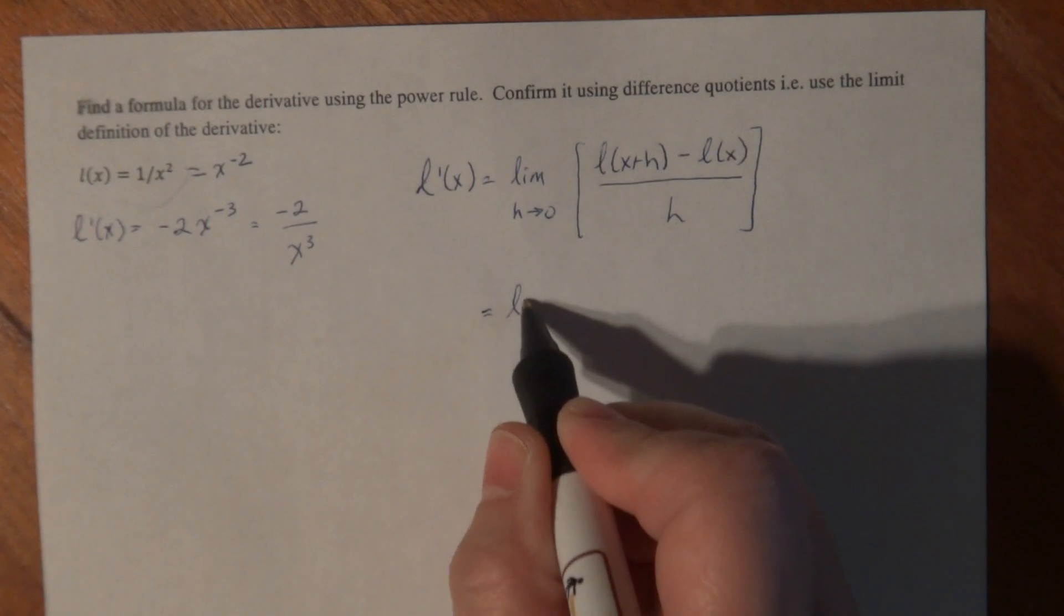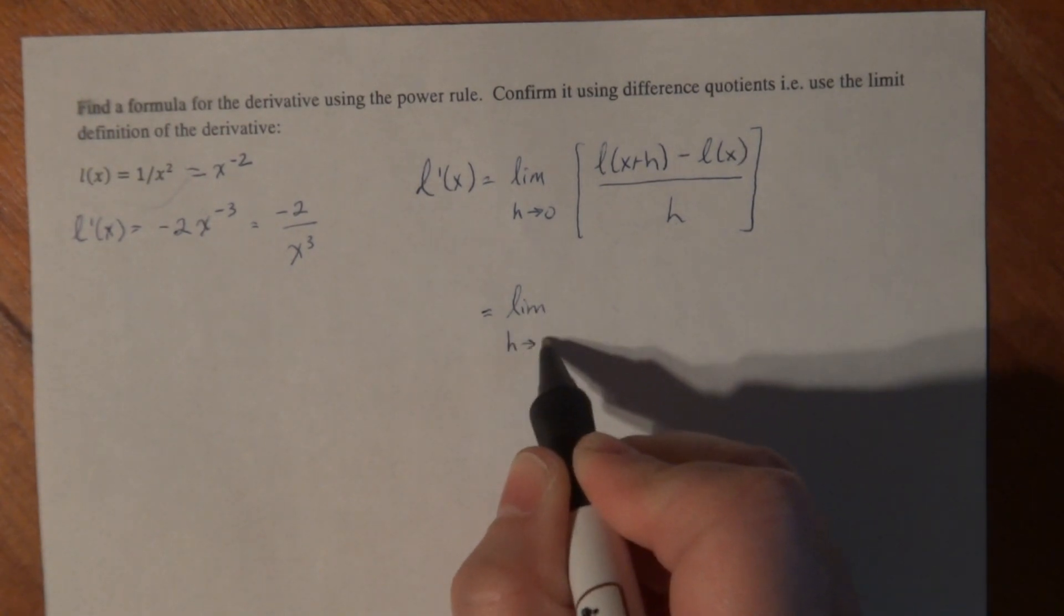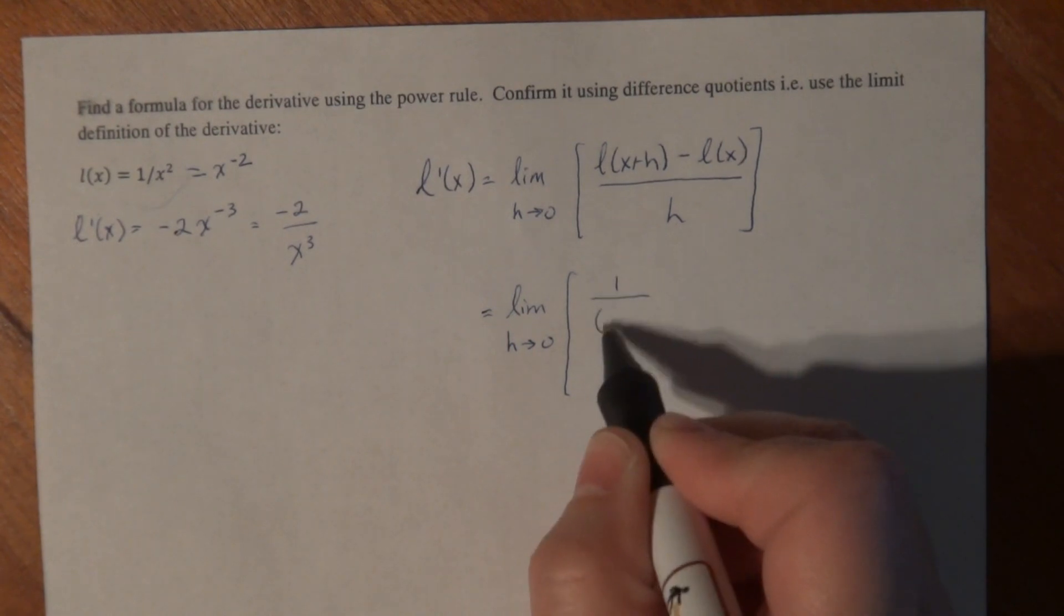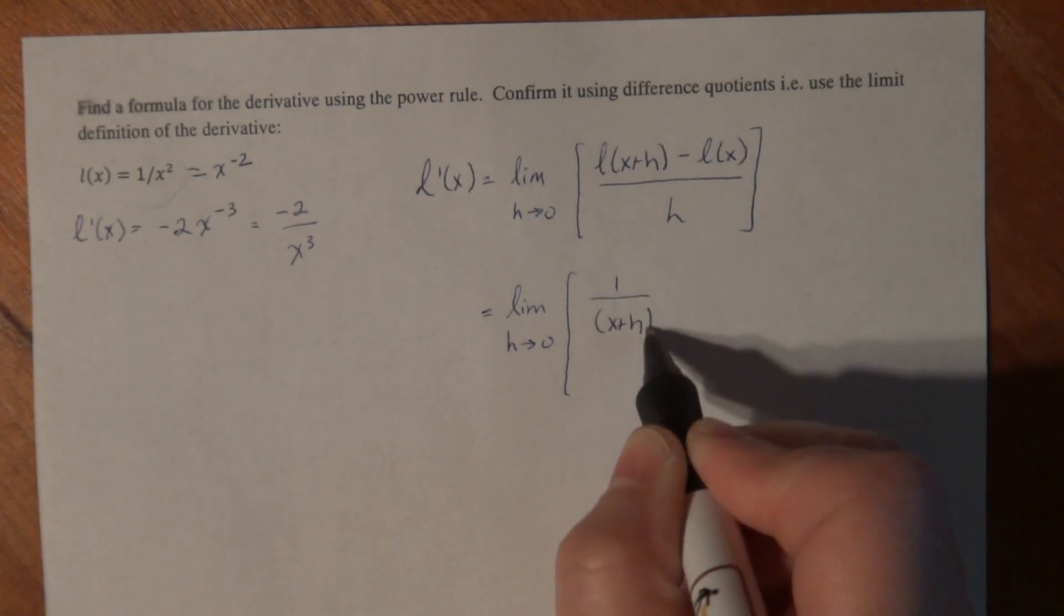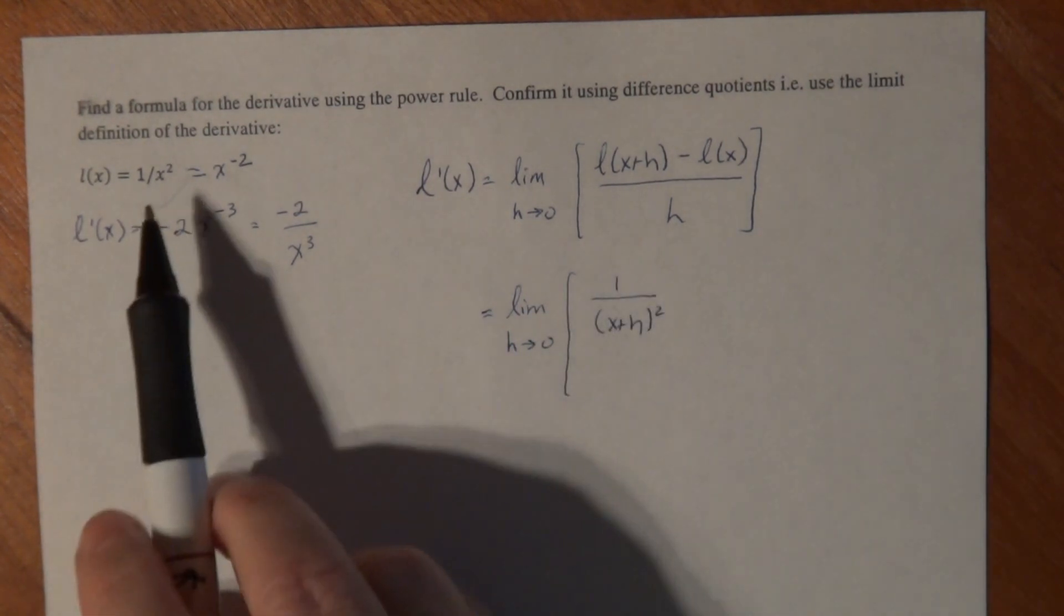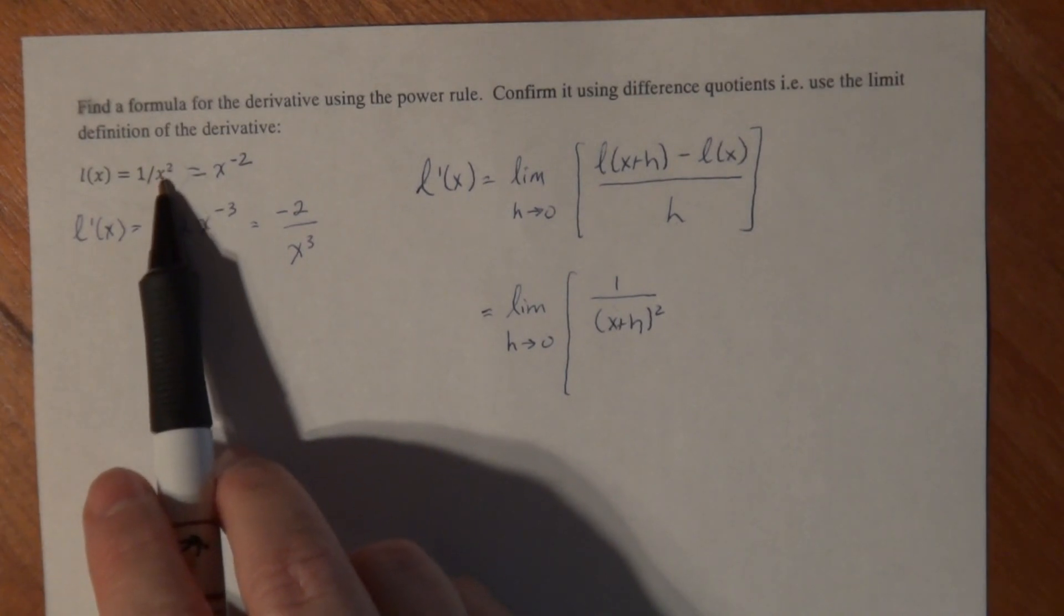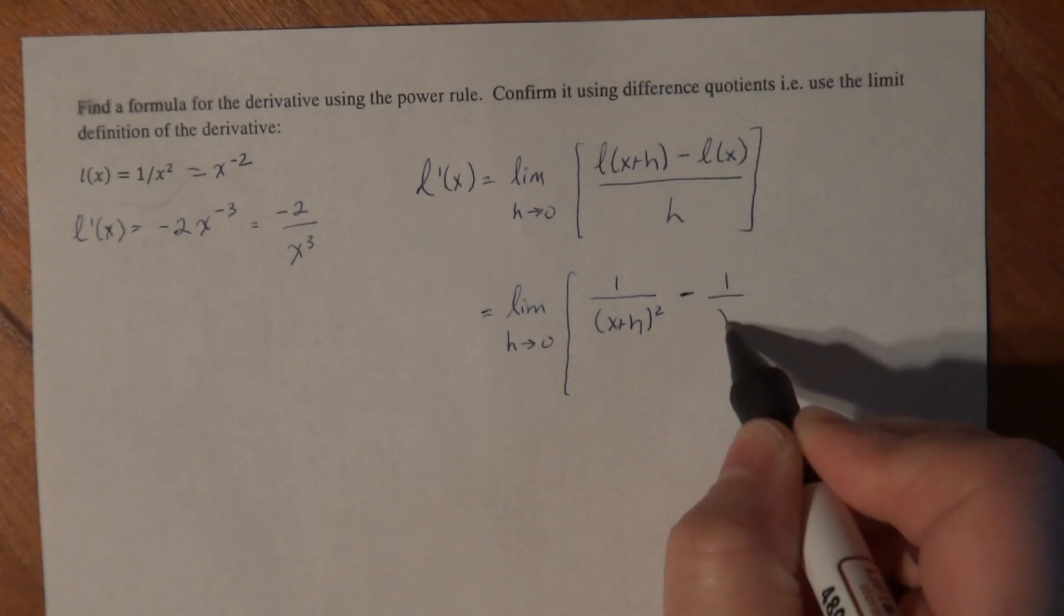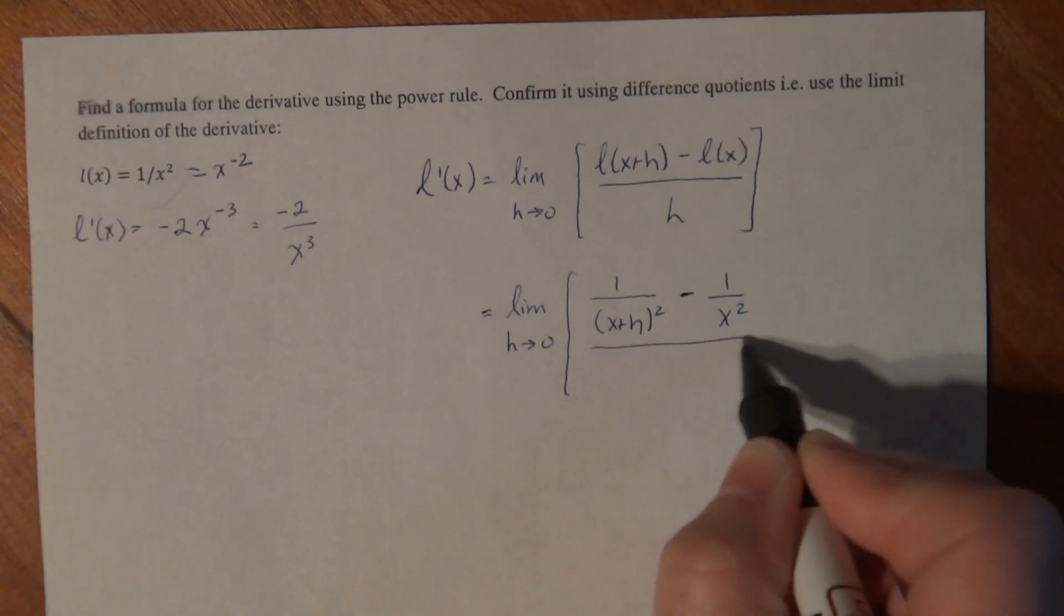if we know our algebra composition of functions properly, L of x plus h becomes 1 over x plus h squared. Substitute in x plus h for the x here, and it becomes this function, minus L of x, which is 1 over x squared, all divided by h.